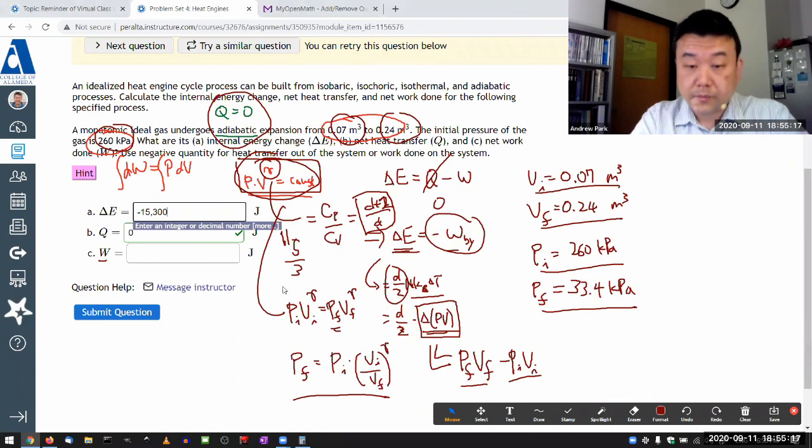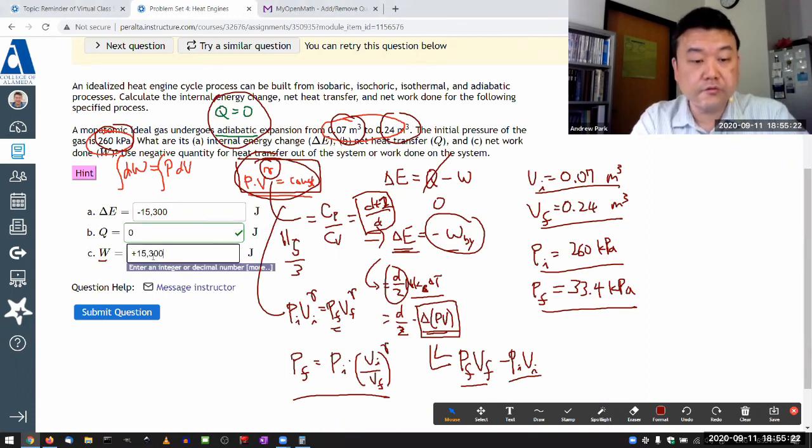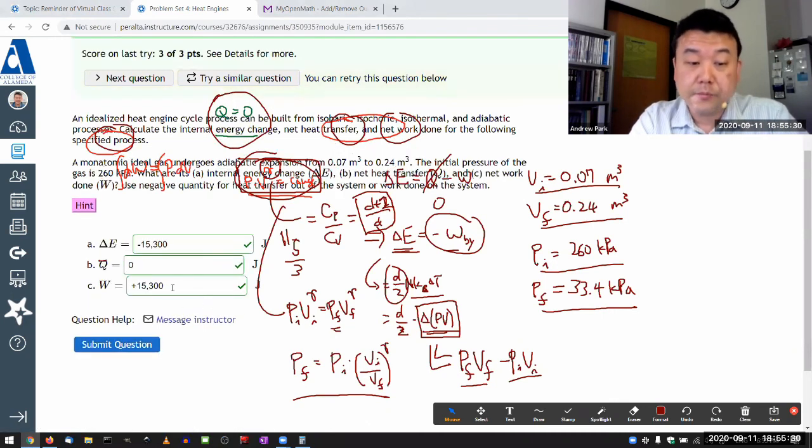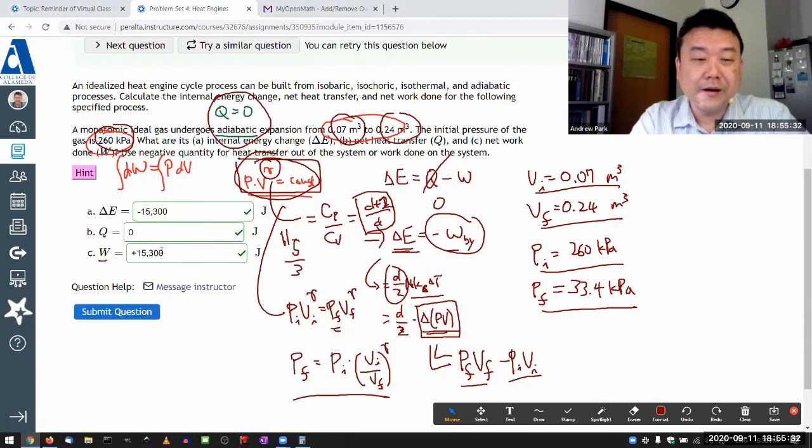So from our earlier discussion here, work done should be plus 15,300 joules. By the way, this plus is not necessary. This comma is not necessary. But I'm typing this to illustrate that my open method will allow you to type in things that are not necessary because it knows to understand all this.